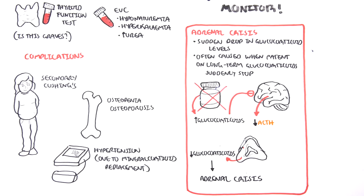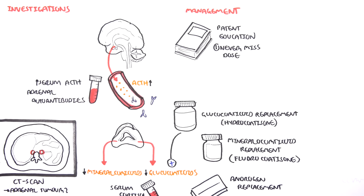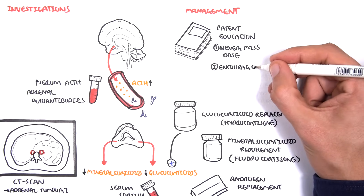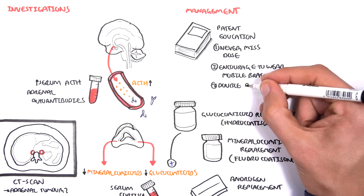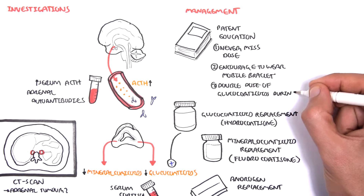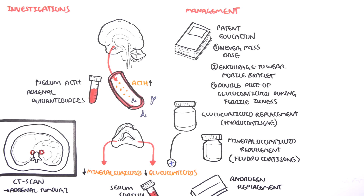Patient education is vital. It's important to not miss doses. Encourage patients to wear a medical alert bracelet. And third, double the dose of glucocorticoids during febrile illness or during periods where it is necessary.